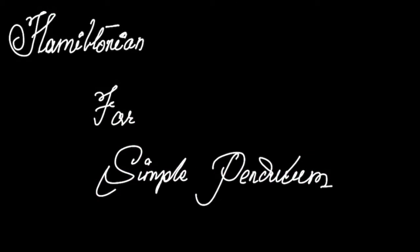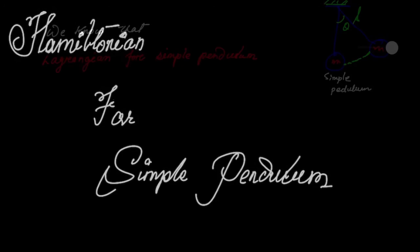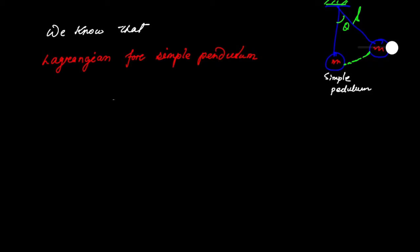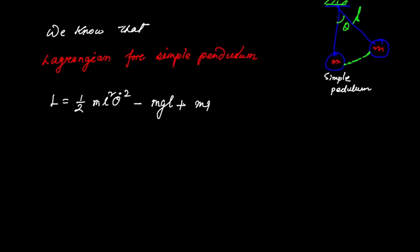Hello friends, in this video today we are going to discuss the Hamiltonian for a simple pendulum. We know that the Lagrangian for a simple pendulum is given by L = (1/2)ml²θ̇² − mgl(1 − cosθ).